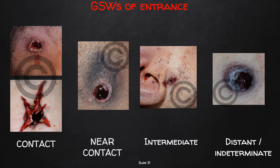Examples of entrance wounds at different distances are shown here. A hard contact wound can result in a muzzle-shape appearance or a star-shaped appearance. A near-contact wound shows dispersion of soot surrounding the entrance. An intermediate gunshot wound shows stippling and powder tattooing around the entrance. A distant or indeterminate gunshot wound shows just the main wound without any secondary thermal, soot, or stippling effects.